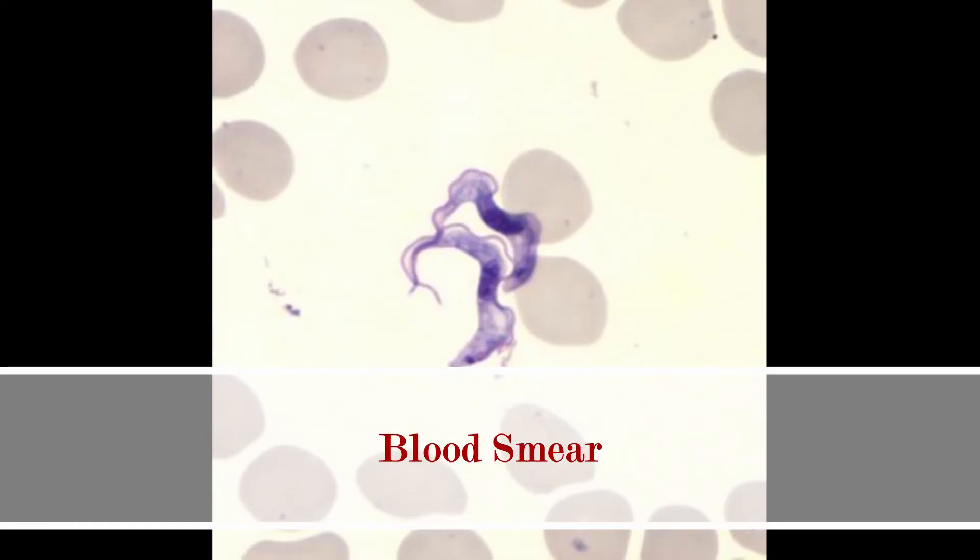Early detection is key. We can detect it early by taking the blood of people who might be infected and smearing it on a slide — fittingly called a blood smear. We can actually see the parasite in the blood smear, allowing us to diagnose it. So protozoans play a big role in causing diseases.